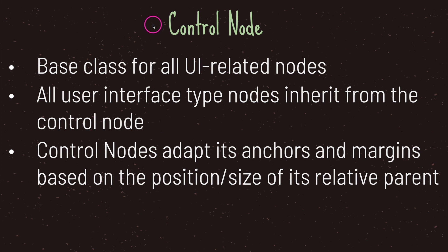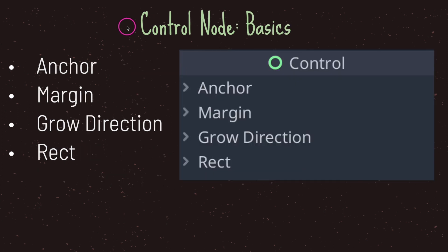The control node adapts its anchors and margins based on the position and size of its relative parent. There are many things that can get you lost when trying to learn more about the control node. However, as a beginner, try to understand these four general property values: anchor, margin, grow direction, and rect — which is short for rectangle.